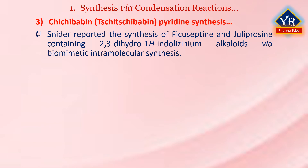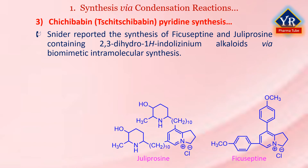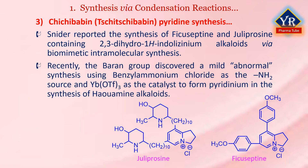Snyder reported synthesis of fuscopetine and juliprosine containing 2,3-dihydroindolexinium alkaloids via biomimetic intramolecular Chichibabin pyridine synthesis. Recently, the Barron group discovered a mild, abnormal Chichibabin pyridine synthesis using benzyl ammonium chloride as an amine source and ytterbium trifluoromethane sulfonate as the catalyst to form pyridinium, in their pursuit of the biochemical origin of the haouamine alkaloids and the total synthesis of haouamine alkaloids.